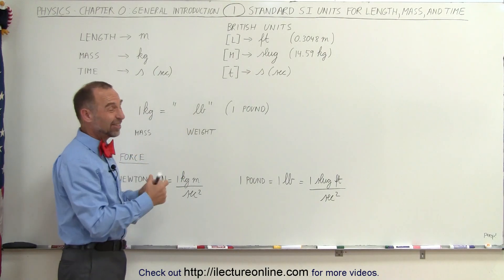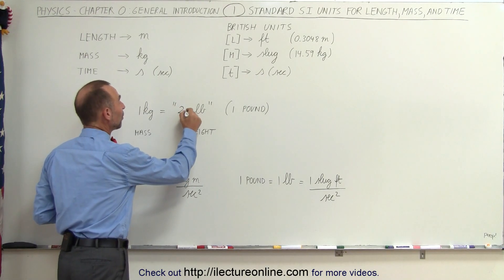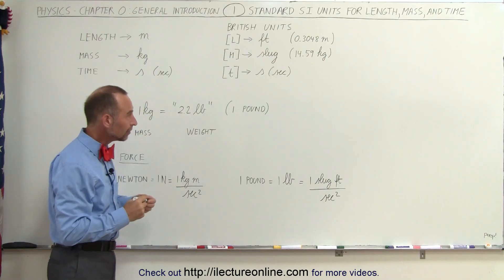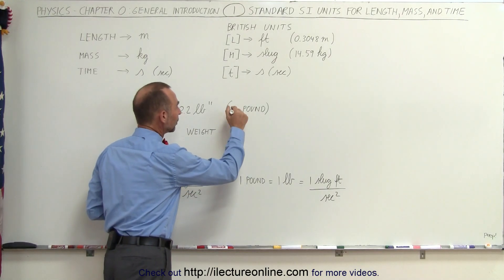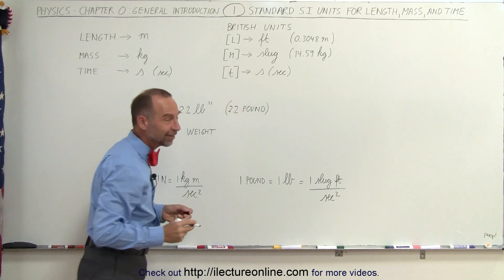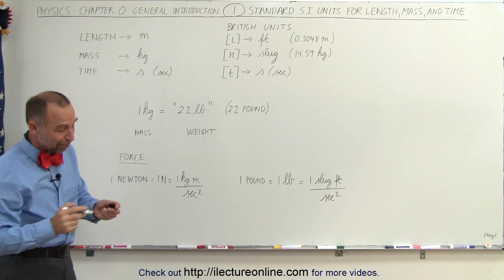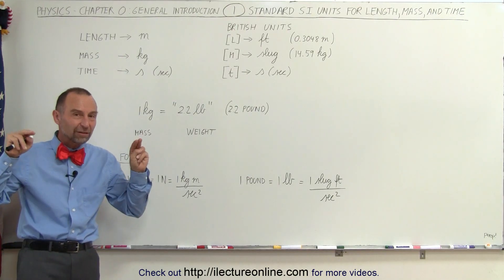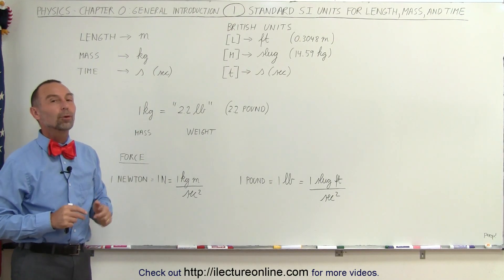It's roughly about 2.2 pounds. And let's go ahead and put this as 2.2 pounds. So yes, of course, one kilogram is not equal to one pound. One kilogram is equivalent to 2.2 pounds.